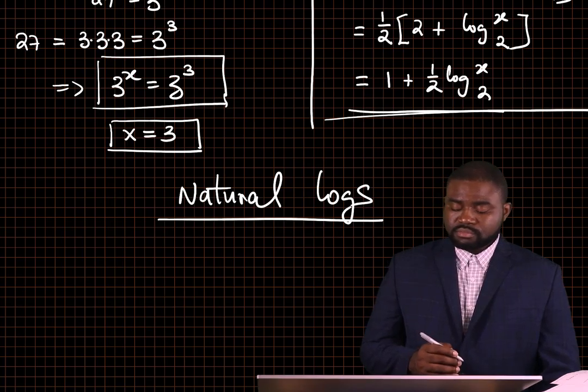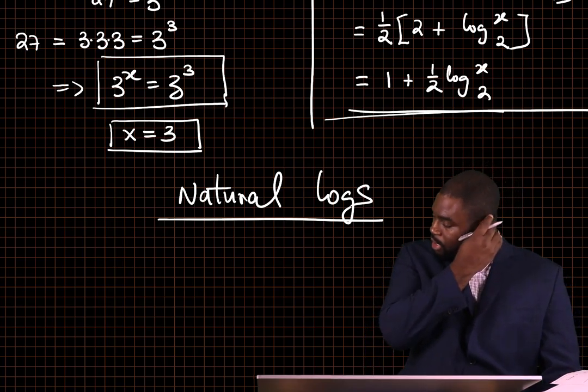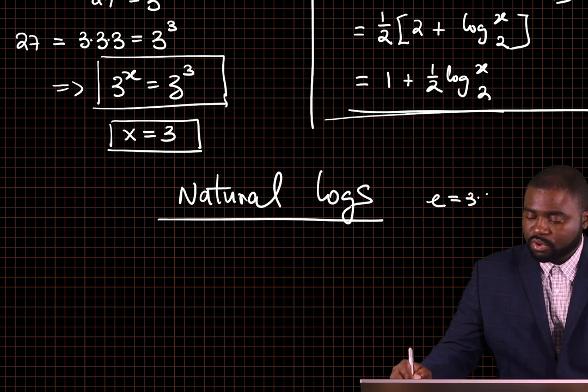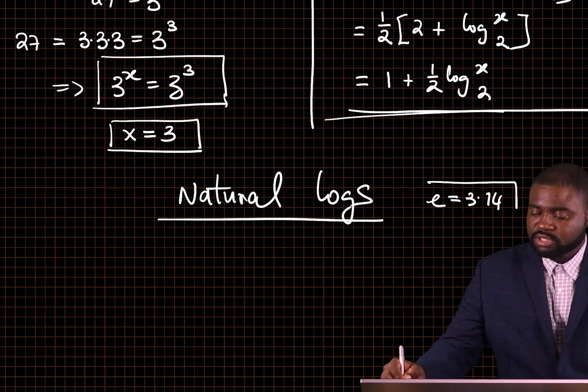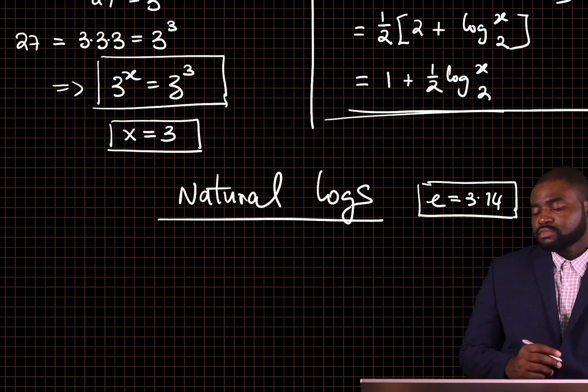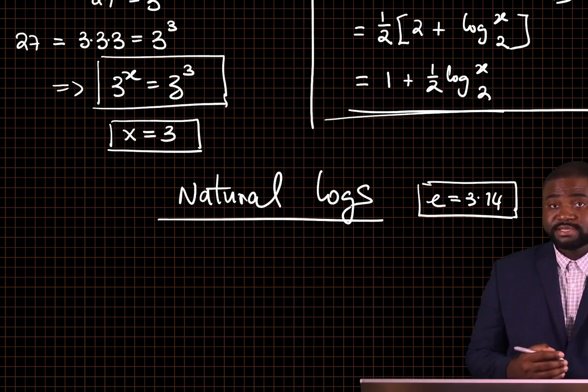Now, we know that the number E is 3.14. It's actually more than this, but this is just the most common approximation. The log of any number to base E is the natural log of that number.